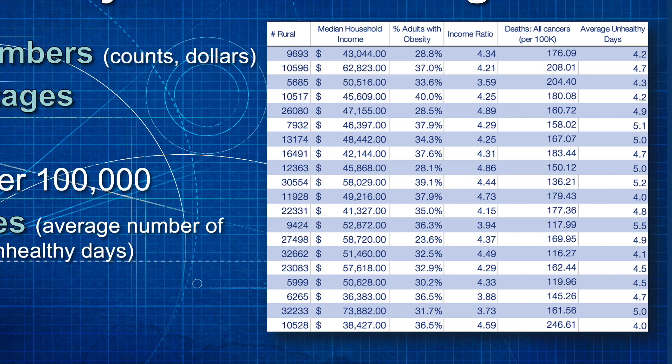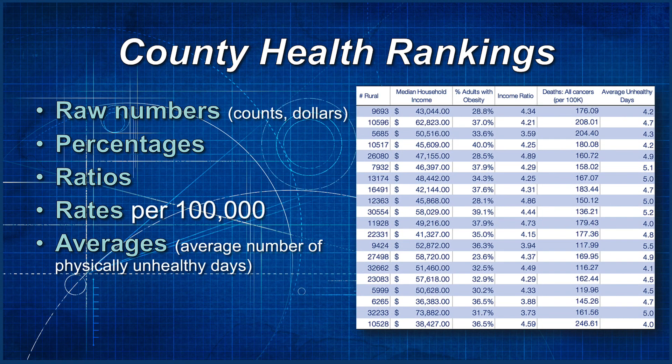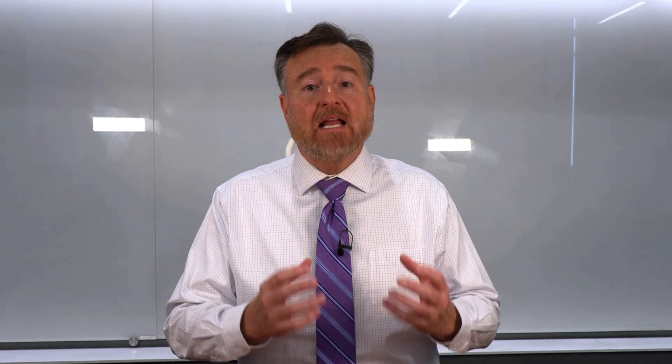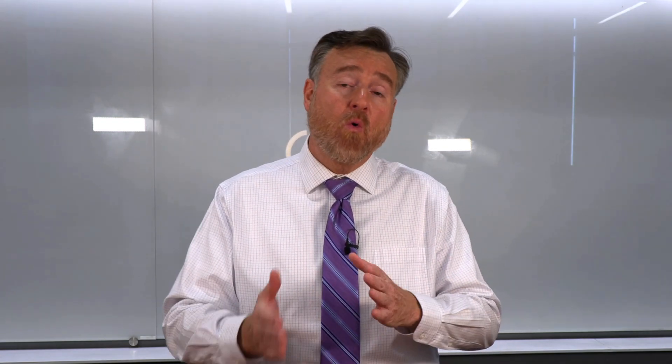These county health rankings come in many forms: like raw numbers, such as the count of the number of people in a rural setting in that county; or the number of dollars representing a median household income; or percentages such as the percent of adults with obesity; or ratios such as income ratio; rates per 100,000 such as deaths from all cancers per 100,000 citizens; or averages such as the average number of physically unhealthy days. All of these data points tell us something important that might allow us to compare between counties or within counties.